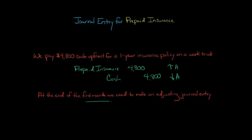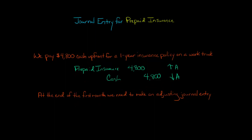Now, at the end of the first month, we have to record an adjusting journal entry to recognize the passage of time — one month of our one-year insurance policy has gone by, and we've used up some of our insurance policy. There are 12 months in a year, so if you take $4,800 and divide it by 12, you get $400 per month.